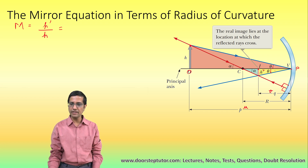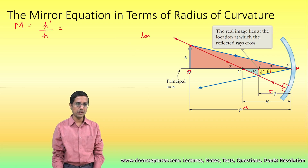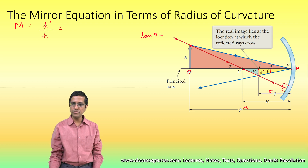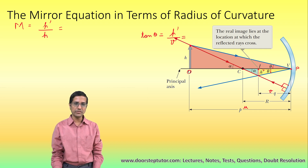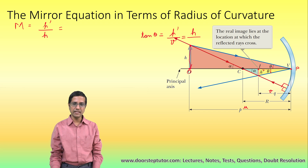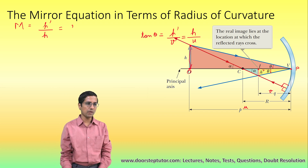We consider the large red triangle and the smaller yellow triangle and write tan theta for both. For the yellow triangle, tan theta equals H dash divided by V. For the large triangle, tan theta equals H divided by U (the base OP). Eliminating tan theta, H dash over H equals V over U.